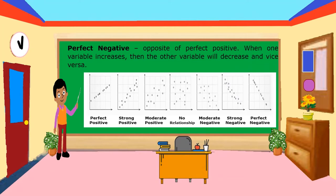And for perfect negative — opposite of perfect positive. When one variable increases, then the other variable will decrease and vice versa. That is the perfect negative trend line.